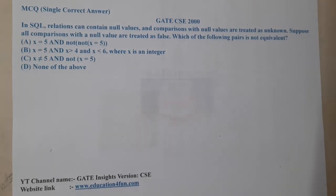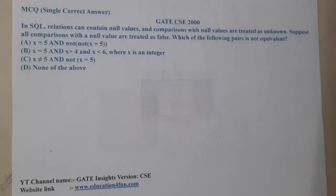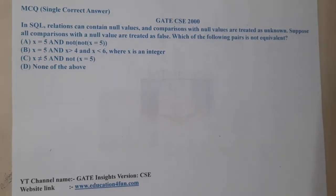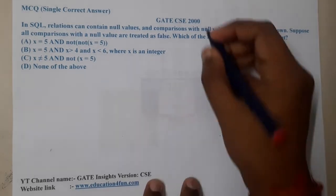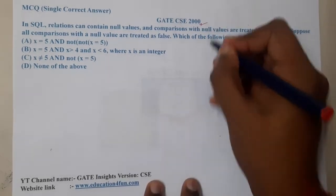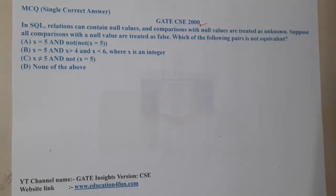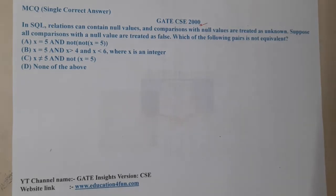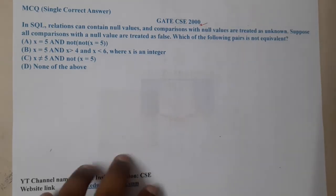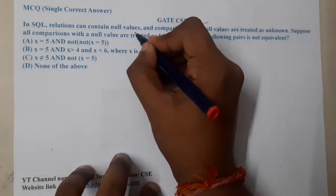Hello guys, we are back with our next lecture. In this lecture let us go through the next question. This question belongs to GATE CSE 2000. The given question is: in SQL, relations can contain null values.